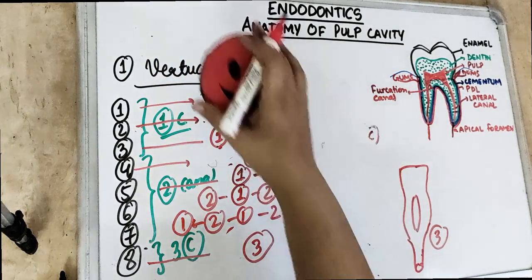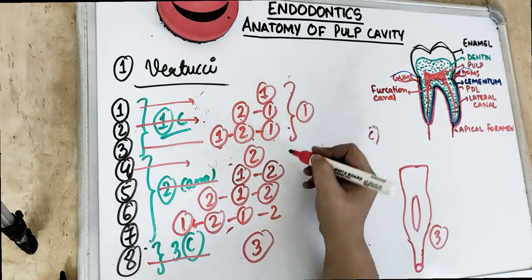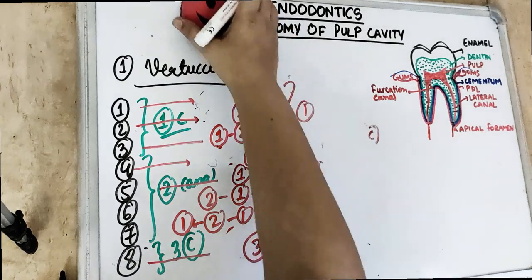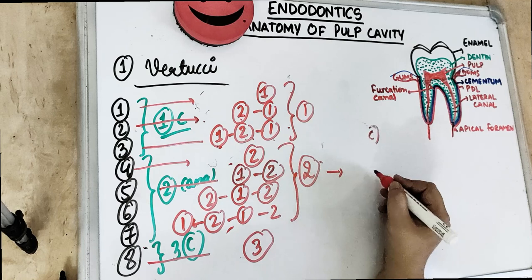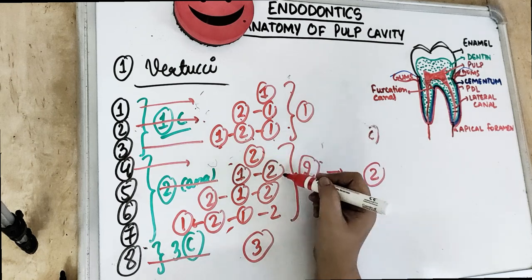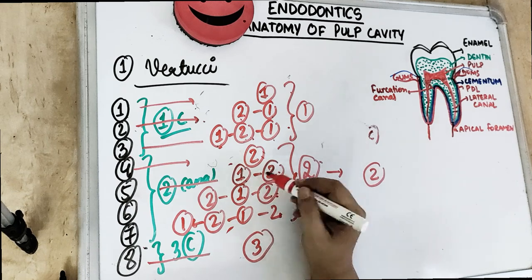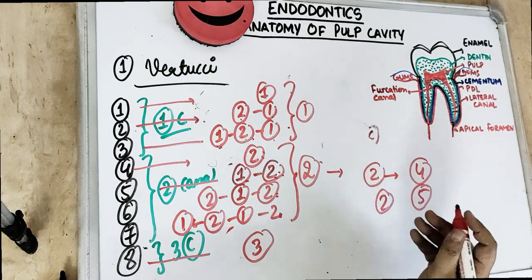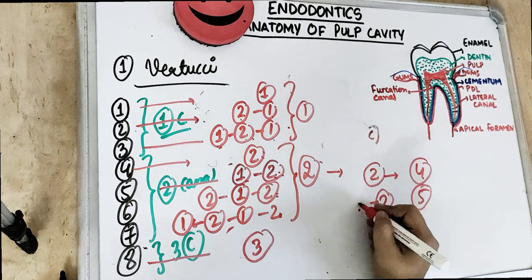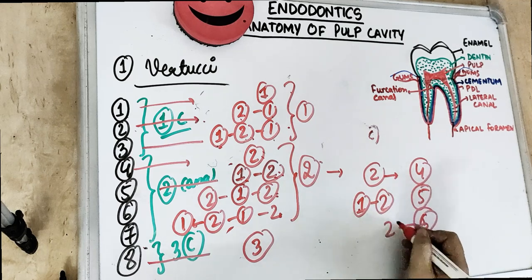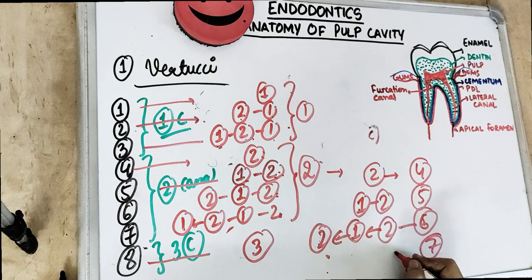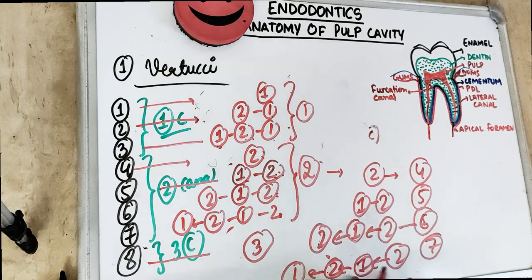From type 4 to type 7, every canal exits as 2 at the apex. Type 4 is 2 canals at the pulp chamber and 2 at the apex. Type 5 is 1 at the pulp chamber and 2 at the apex. Type 6 is 2 at the pulp chamber, uniting as 1 in the middle, then leaving as 2 at the apex. Type 7 is 1 at the pulp chamber, dividing to 2, uniting as 1, and dividing again to 2 at the apex.